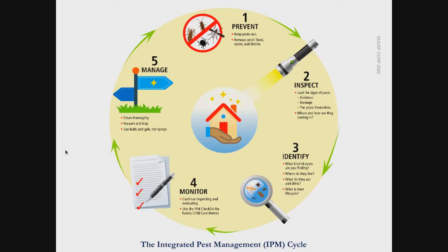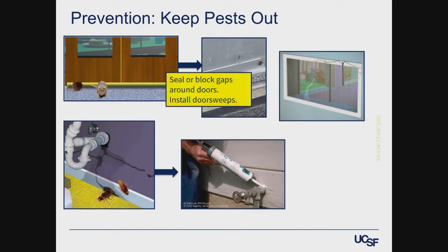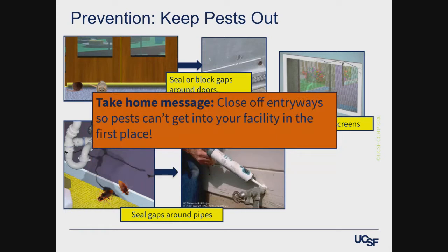When talking about prevention and keeping pests out, there are different ways pests can enter a home or child care center. We want to seal or block gaps around doors and install door sweeps, seal gaps around any pipes and fix leaks, and patch holes and screens. The take-home message is to close off any entryways so pests cannot get into your facility in the first place.